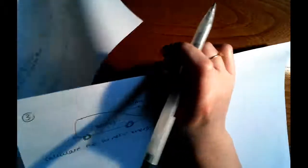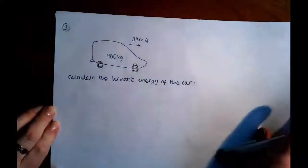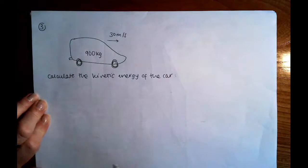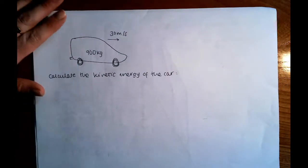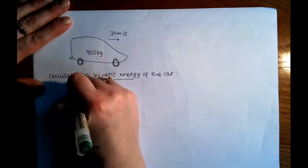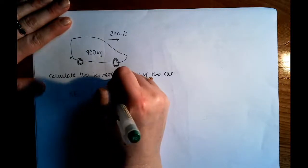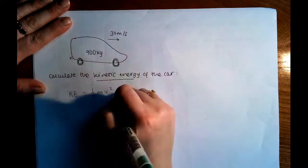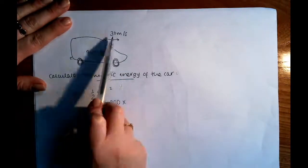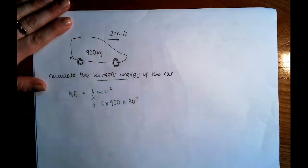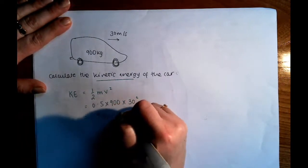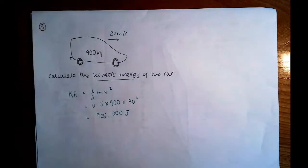Number three is much more straightforward. It's just a simple car problem — you've got a car that's 900 kilograms and it's travelling at 30 metres per second, and you're asked to calculate its kinetic energy. We know that KE equals a half mv squared. So it's 0.5 multiplied by 900 multiplied by 30 squared — don't forget to square the velocity. When we do that, we get 405,000 joules. That's the kinetic energy of the car, quite straightforward.